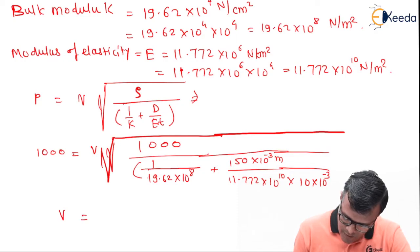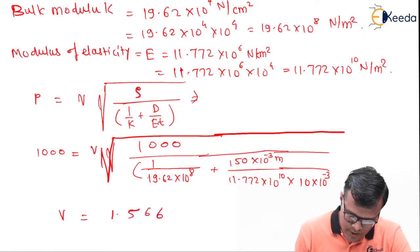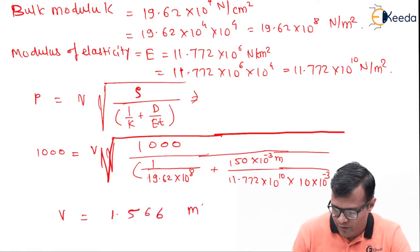After solving, we will have value of V. We can calculate value of V as 1.566. Obviously, unit of velocity is in meter per second.